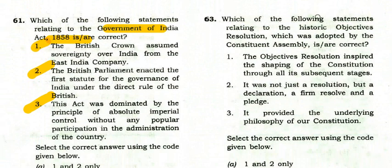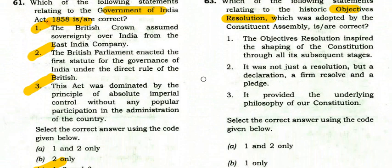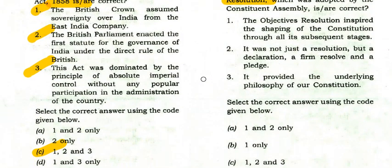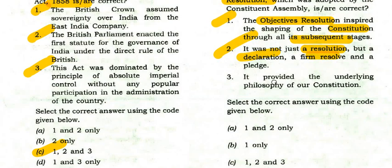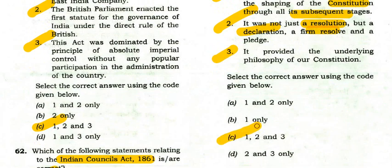Which statements regarding the historic Objectives Resolution adopted by the Constituent Assembly are correct? The Objectives Resolution inspired the shaping of the constitution through all subsequent stages — true. It was not just a resolution but a declaration, a firm resolve, and a pledge — true. It provided the underlying philosophy of the constitution — true. So option C is right: all are correct.